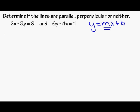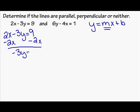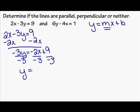Let's go to the first one: 2x minus 3y equals 9. I want to get y by itself, so I'm going to subtract 2x from both sides of the equal sign. So I get negative 3y equals negative 2x plus 9. I need to get y by itself, so I'm going to divide each part by negative 3. So I get y equals 2 thirds x minus 3. A negative divided by a negative is a positive, giving 2 thirds x, and 9 divided by negative 3 is negative 3. So 2 thirds is the slope of that line.